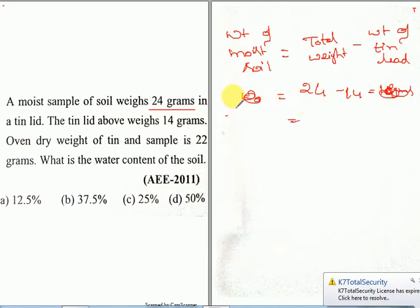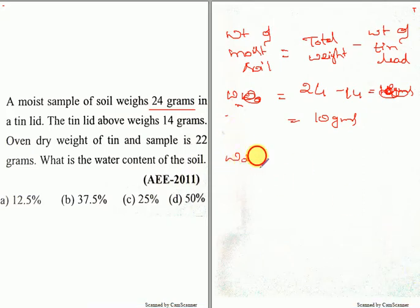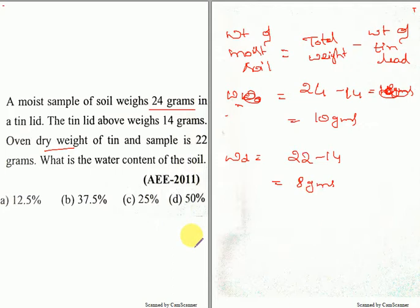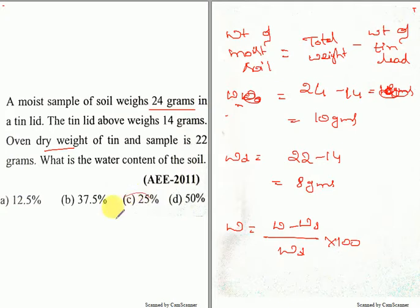The weight of moist soil is 24 minus 14 which is equal to 10 grams. Now we need to find the weight of the dry soil: weight of dry soil equals 22 minus 14, which equals 8 grams. So water content w equals (weight of moist soil minus weight of dry soil) divided by weight of dry soil, into 100. If you calculate you are supposed to get 25 percent.